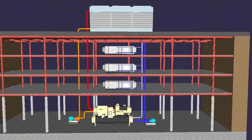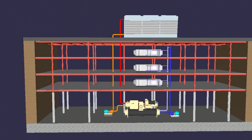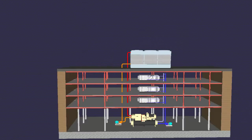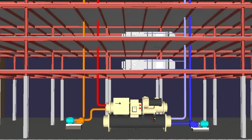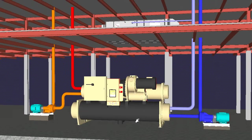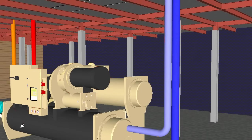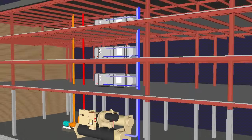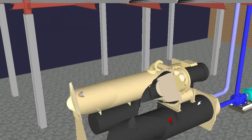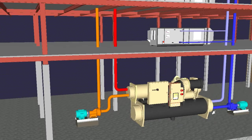In this very typical setup we've got a chiller here along with the distribution pumps, the air handling units, and the cooling tower which is up on the roof. The chiller is the producer of chilled water in this system. The chiller has two main cylinders: one is the evaporator, where the chilled water is produced, and the other is the condenser cylinder at the back, where the heat of the building is sent.